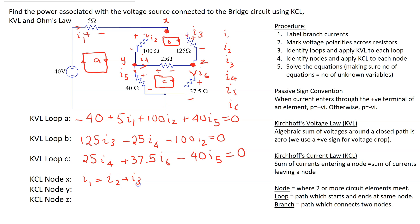At node Y, I5 is leaving and I4 is leaving. Only I2 is entering, so we get I2 equals I4 plus I5. At node Z, I4 and I3 are entering and I6 is leaving, so we get I6 equals I3 plus I4.